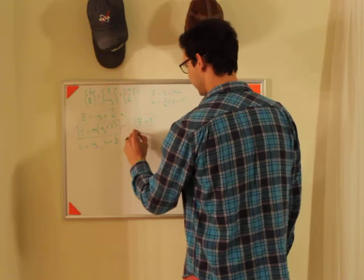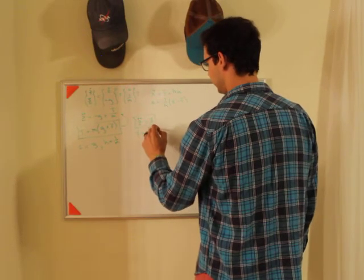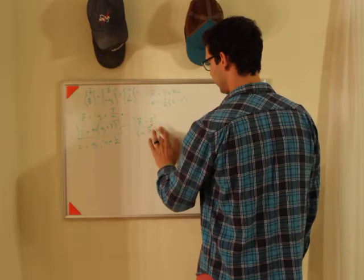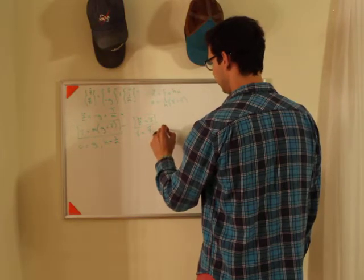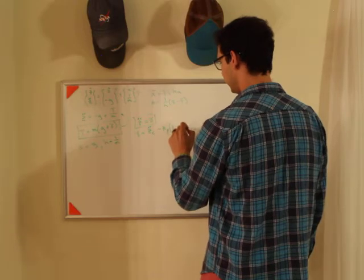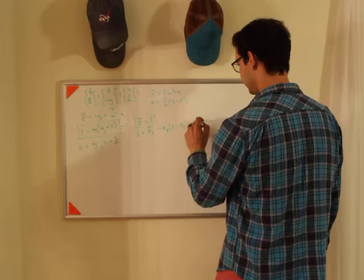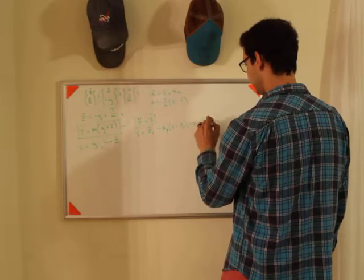And so if you just let gamma equal, z double dot command plus, let's see I'm sorry, minus kP times z minus z command minus kD times z dot minus z dot command. Again this is assuming full state feedback.